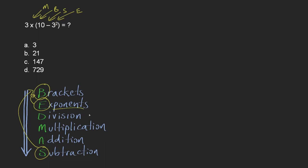So we're going to deal with that first. It's 3 × (10 - 3²). We're going to deal with the exponent inside of the brackets first. So this is going to be 10 - 3². 3² is 9.